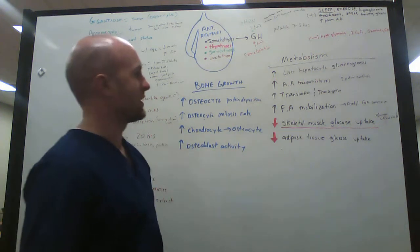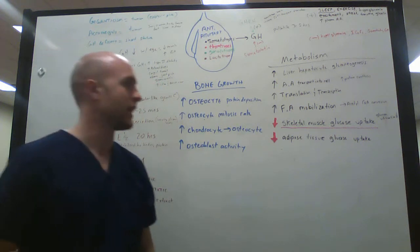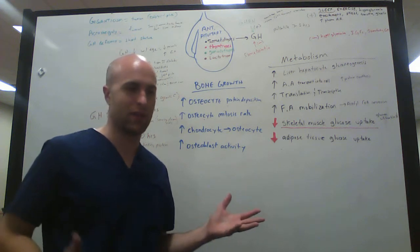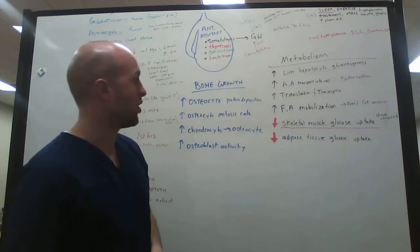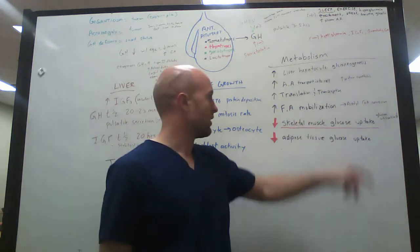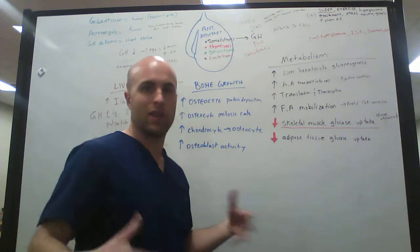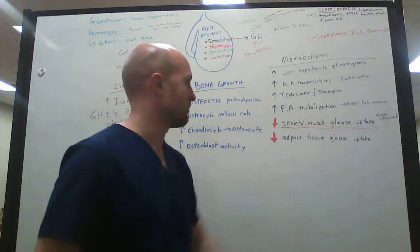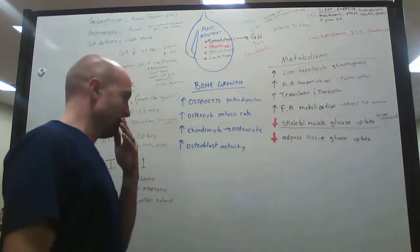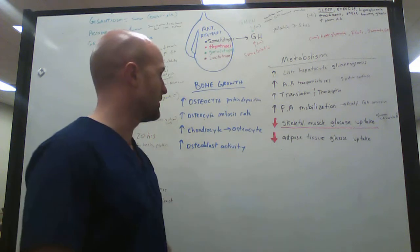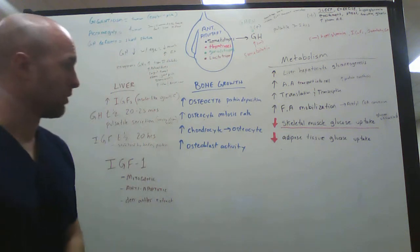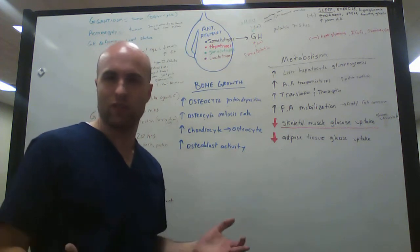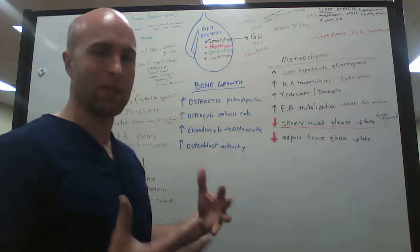It increases fatty acid mobilization and ultimately CoA conversion, which makes sense—you're going to need more energy to grow. It also decreases skeletal muscle glucose uptake. This might be in part because it's requiring that glucose and energy to build more body. So less glucose gets taken up in skeletal muscle because it's too busy being used elsewhere to build stuff. Also, a decrease in adipose tissue glucose uptake. So your adipose tissue, the more growth hormone you have, it's not going to take up as much sugar, which means you're not going to get as fat—you'll be more lean.